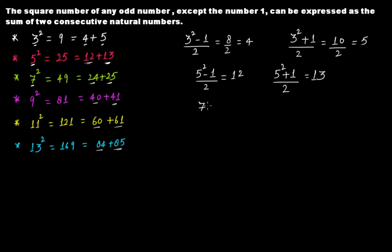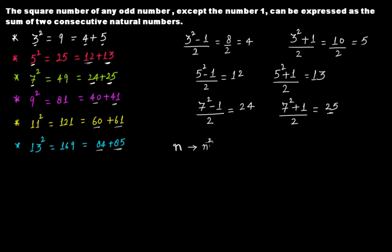For n = 7: (7² − 1) ÷ 2 = (49 − 1) ÷ 2 = 48 ÷ 2 = 24, and (7² + 1) ÷ 2 = (49 + 1) ÷ 2 = 50 ÷ 2 = 25. So 24 and 25 are the two numbers. In general, if n is your odd number, then n² can be written as the sum of two consecutive natural numbers: (n² − 1) ÷ 2 plus (n² + 1) ÷ 2.